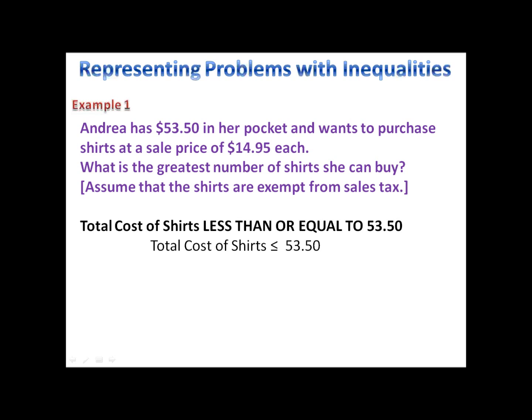We don't know how many shirts she's going to buy. That's the unknown. But they're $14.95 each. So we have $14.95 times X, X being however many shirts she buys. That has to be less than or equal to $53.50. That means X is less than or equal to 3.579. So Andrea can buy 3.579 shirts.